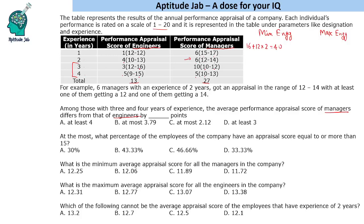For the 4-year experience engineers, one person must get 15 (mandatory), and the rest — 4 people — get the minimum appraisal of 9. So 9 into 4 = 36, plus 15 = 51. Combined, the total appraisal is 91 for 8 people, giving a minimum average of 91 ÷ 8 = 11.375.